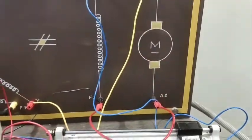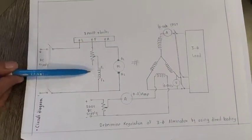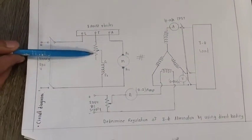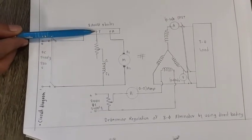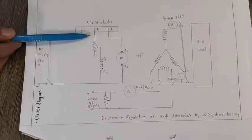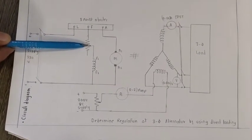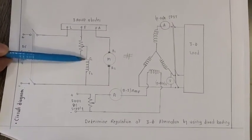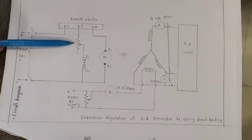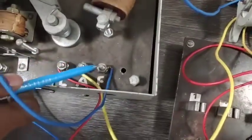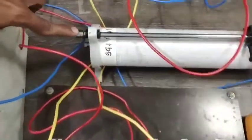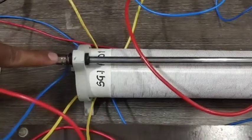The next connection is for field winding. The field winding is connected through this variable resistance — from F we are going to connect the rheostat first, and then the variable terminal is connected to the field winding. F is connected to the rheostat at the fixed point.